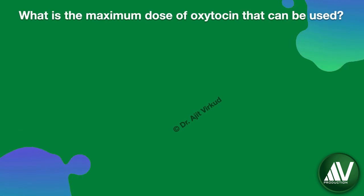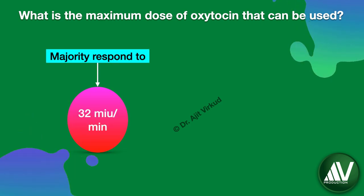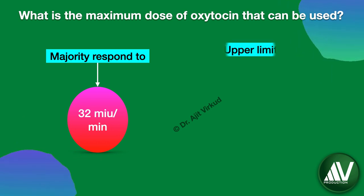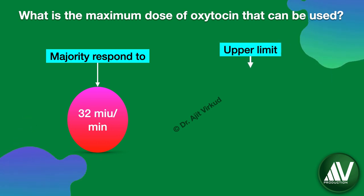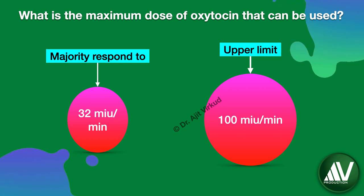Q: What is the maximum dose of oxytocin that can be used in labor? The majority of patients respond to 32 milli-international units per minute or less. Although there is no fixed upper limit, it is wise to consider prostaglandin stimulation if the uterus is still inert at 100 milli-international units per minute.